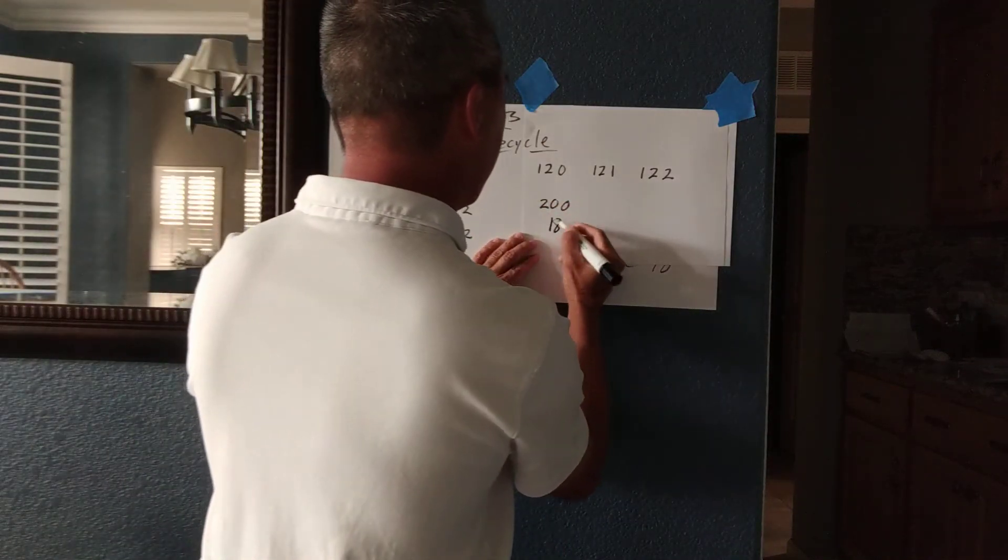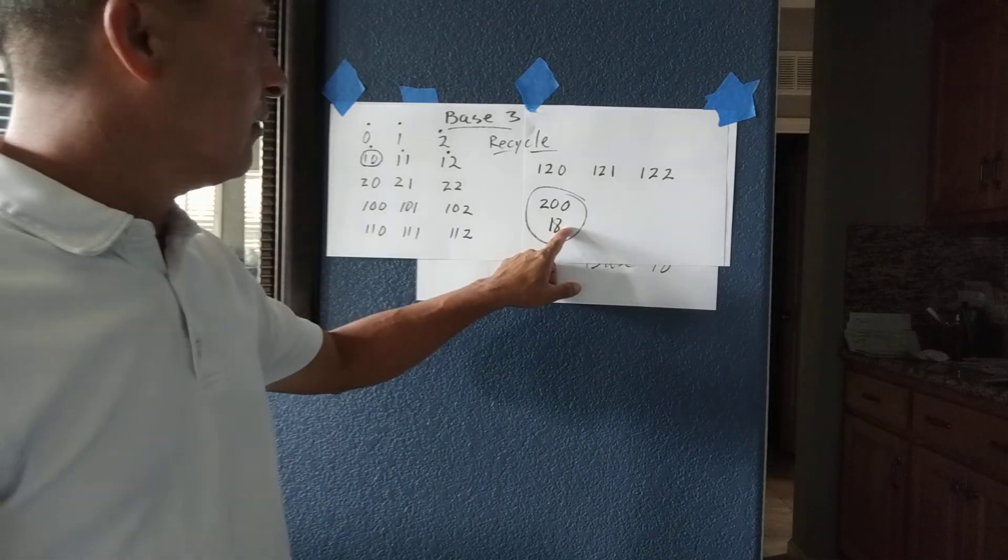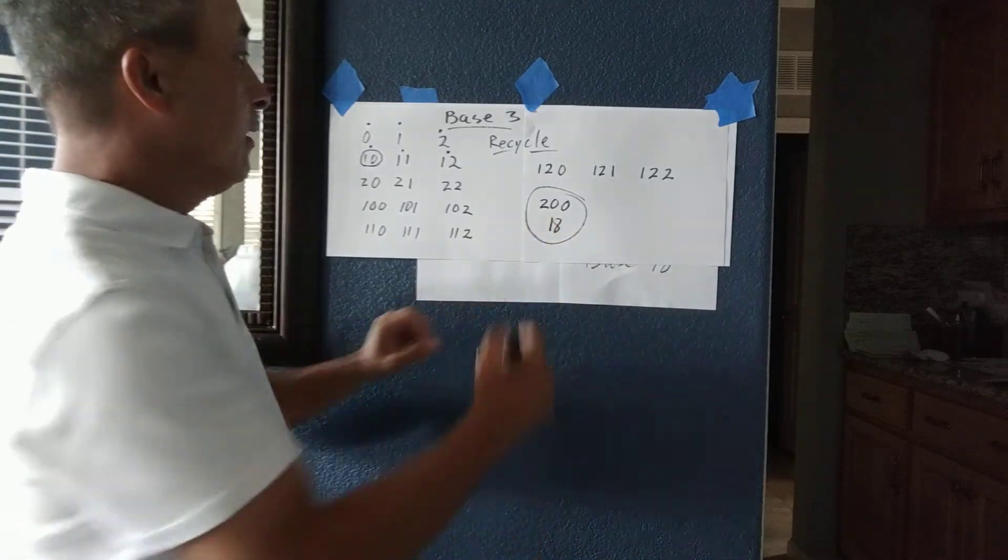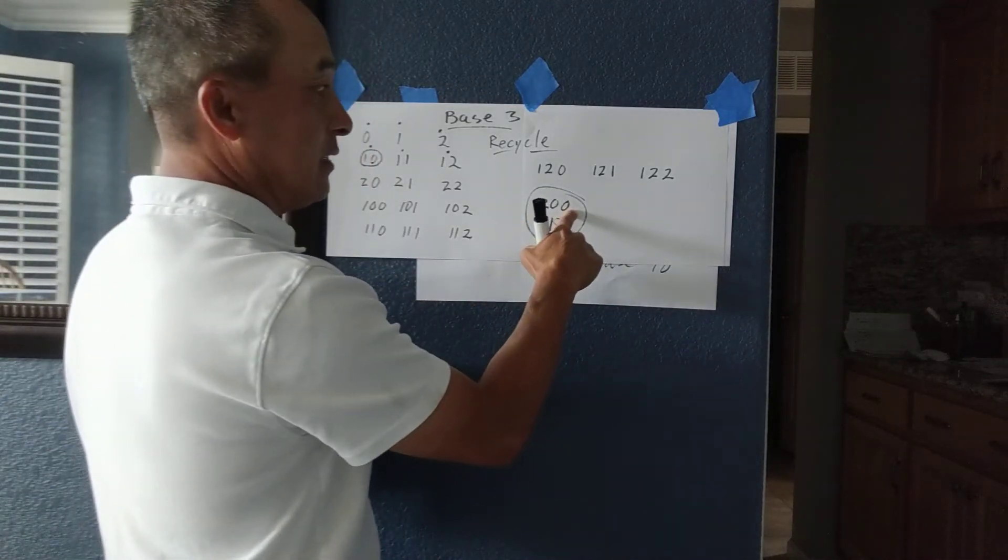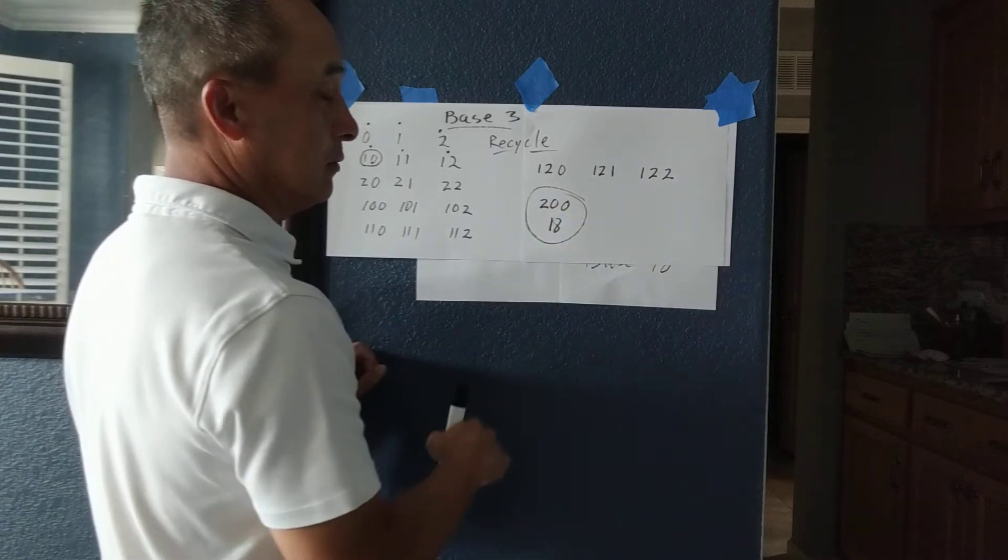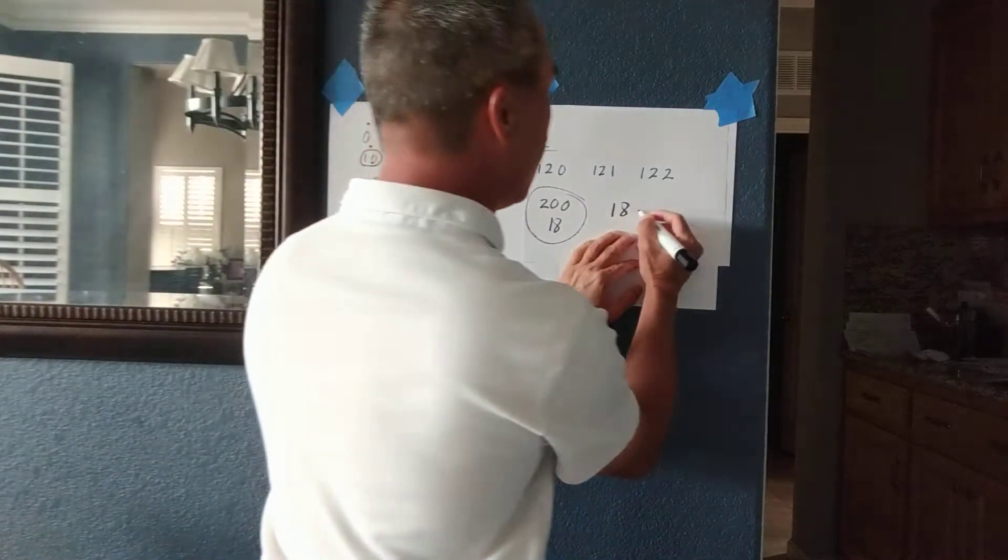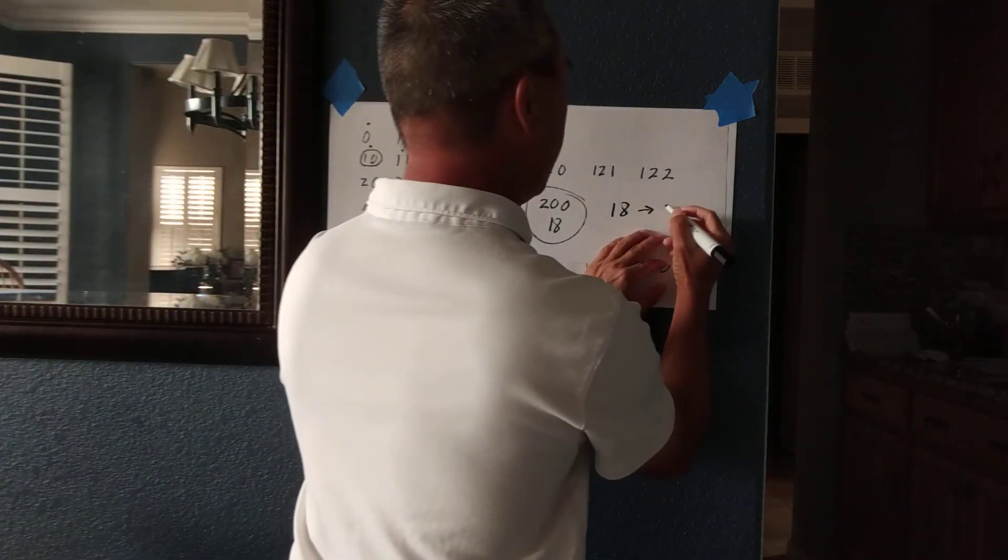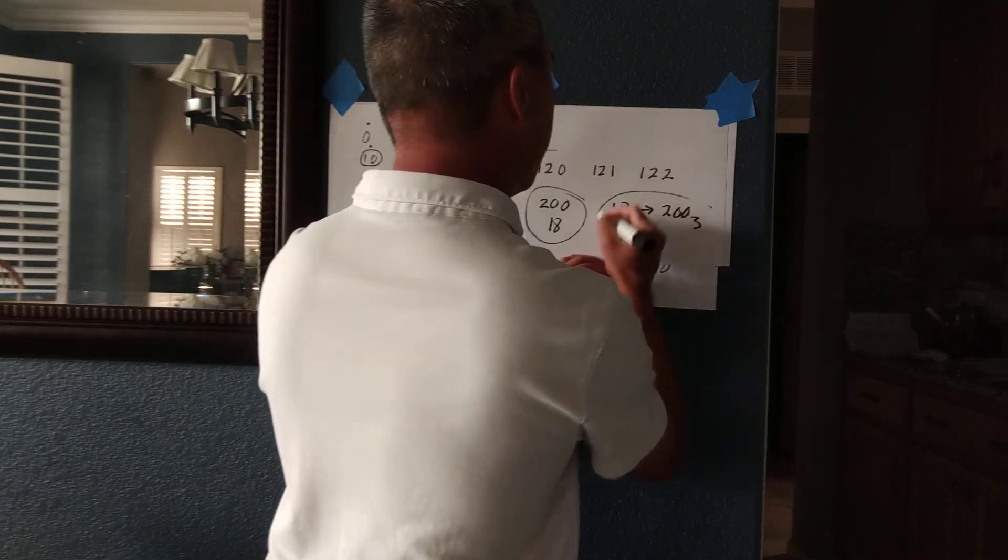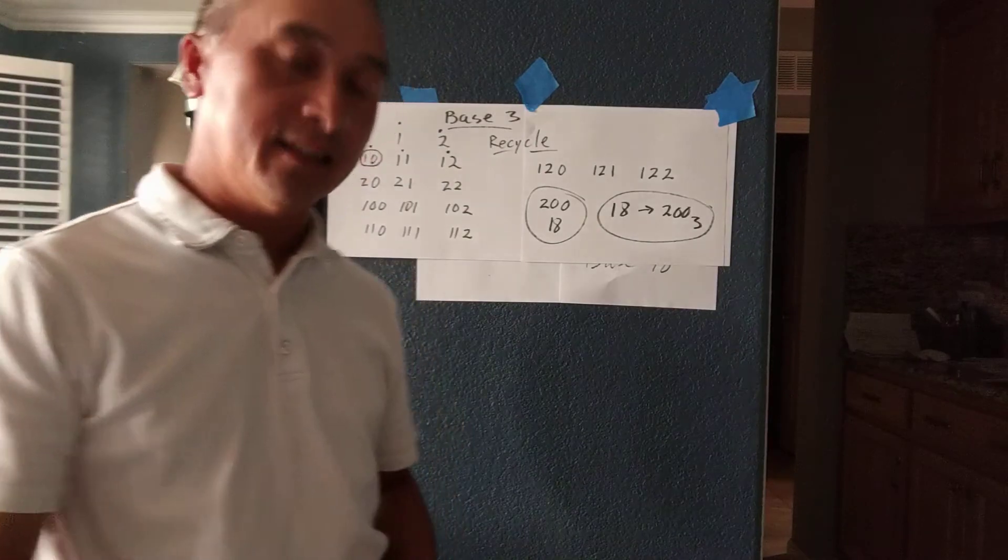So in standard base 10, 18th count we represented by 1, 8. In base 3, 18th count, our 18th count is 2 0 0. So in this case base 10 18 count is the same as 2 0 0 base 3. So if you got 2 0 0 base 3 for your 18th count from the last video, you got it right.